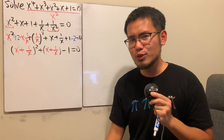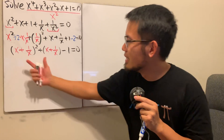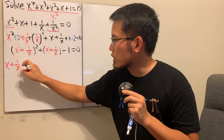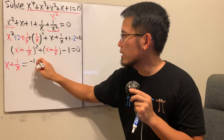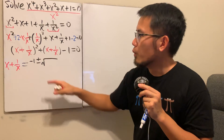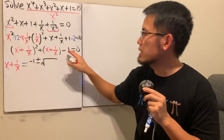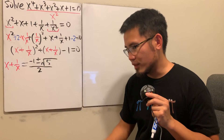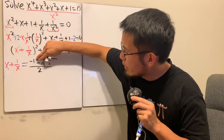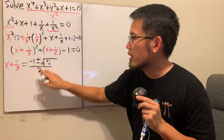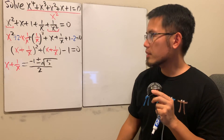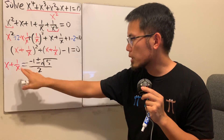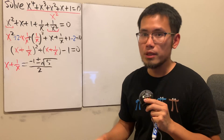We can use the quadratic formula, letting u = x + 1/x. By the quadratic formula, u equals negative 1 plus or minus the square root of 1² minus 4·(1)·(−1), which gives square root of 5. So u = (−1 ± √5)/2. Notice the golden ratio appears here: (−1 − √5)/2 is the negative golden ratio, and the other is the negative of its inverse. But we still have to solve for x.